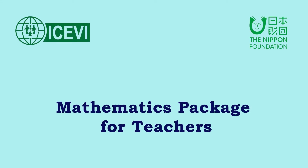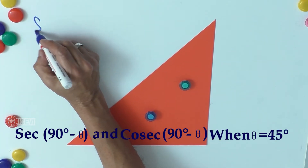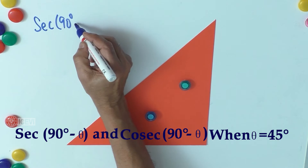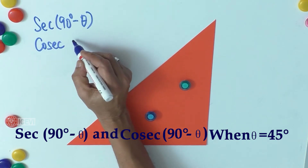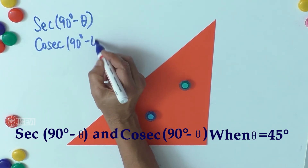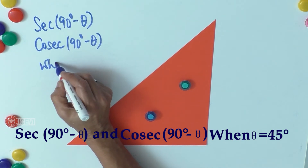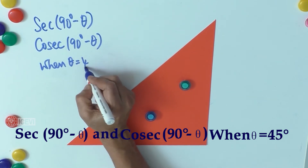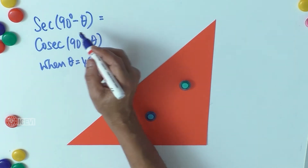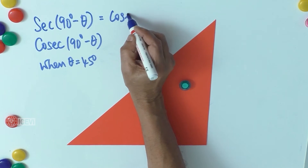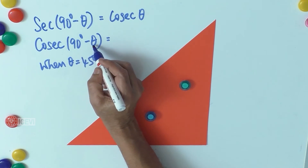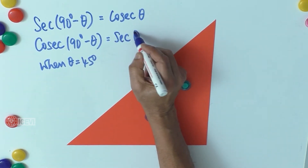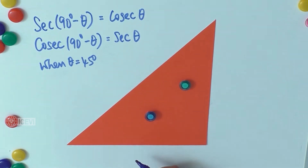The ICBI Nippon Foundation Mathematics Package for Teachers. The title of the video is 'Secant(90° - θ) and Cosecant(90° - θ)'. When θ equals 45 degrees, we have to prove that sec(90° - θ) equals csc(θ), and csc(90° - θ) equals sec(θ), that is, sec 45° and csc 45°.